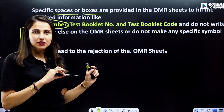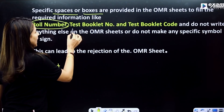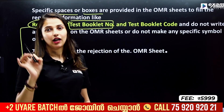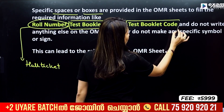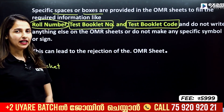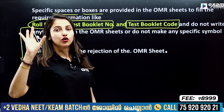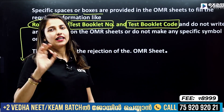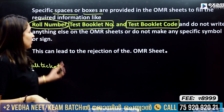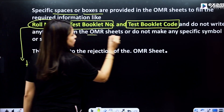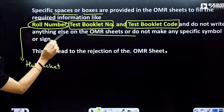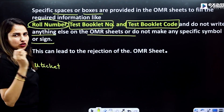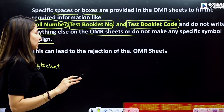How do I fill it? A ten-digit roll number is to be filled. That is the test booklet number — we have a question paper booklet number, fill it. And the test booklet code — that is correct, fill it. If you have a question paper, you have a code.